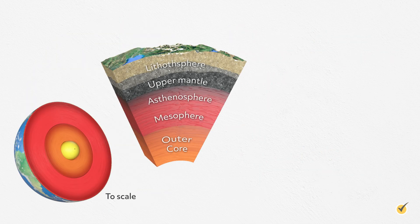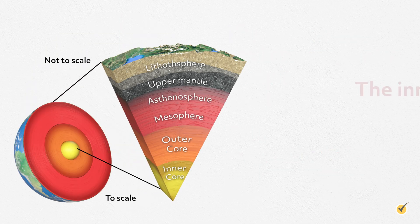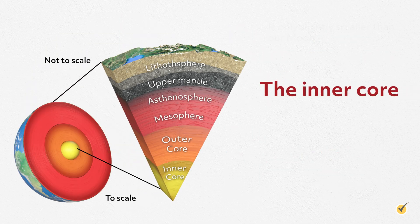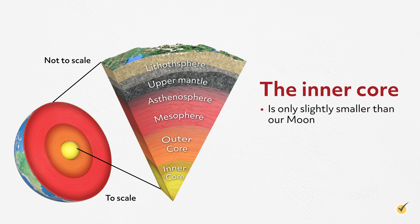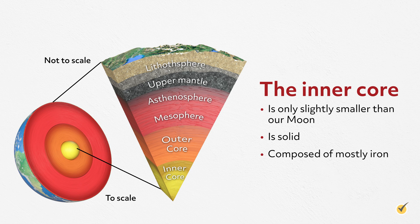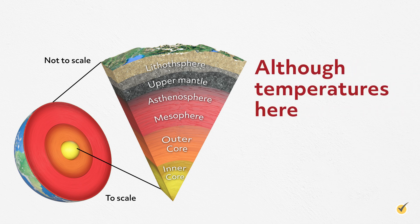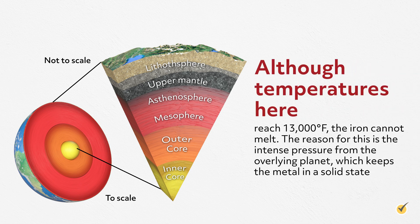And at last, we've finally reached Earth's inner core, which is only slightly smaller than our moon. The inner core is solid and composed of mostly iron. Although temperatures here reach 13,000 degrees Fahrenheit, the iron cannot melt. The reason for this is the intense pressure from the overlying planet, which keeps the metal in a solid state.